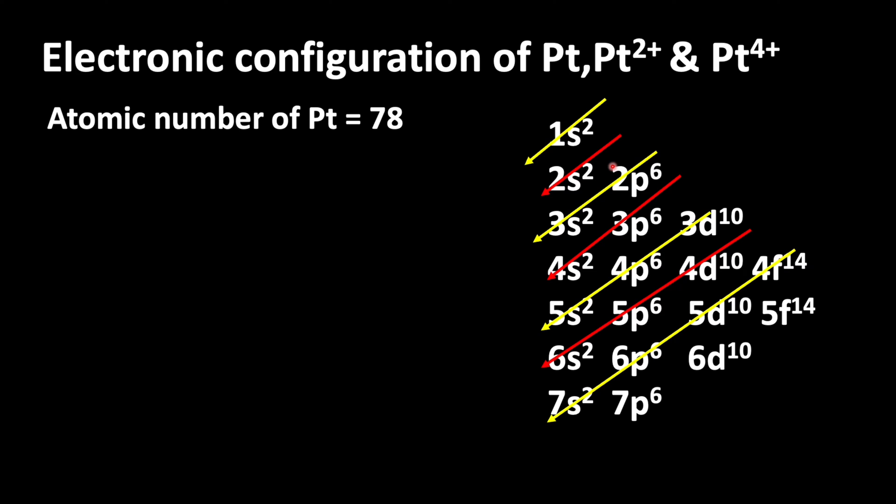Here you can see the filling of orbitals in increasing energy level. It means after filling 1s orbital, then the electron enters into 2s, then 2p, 3s, 3p, 4s, 3d. The maximum number of electrons in s orbital is 2, p orbital is 6, d orbital is 10, and f orbital is 14.